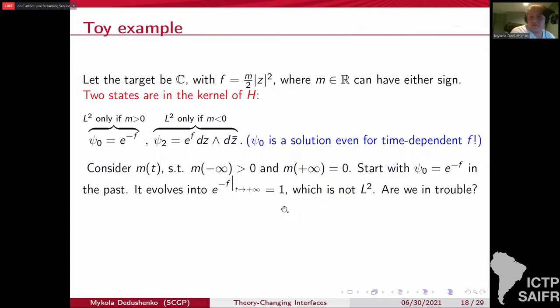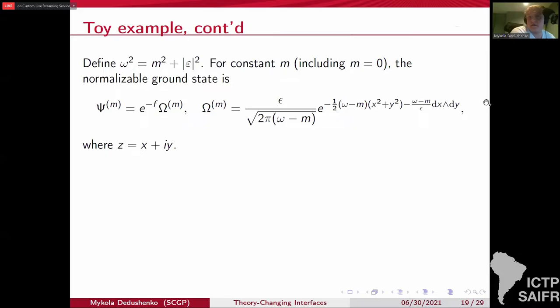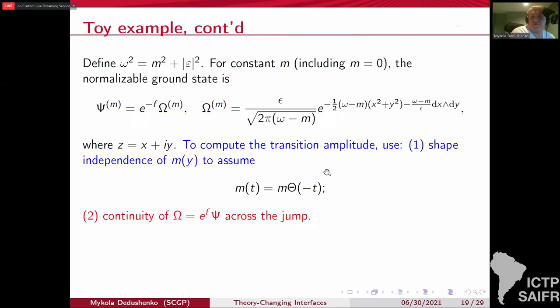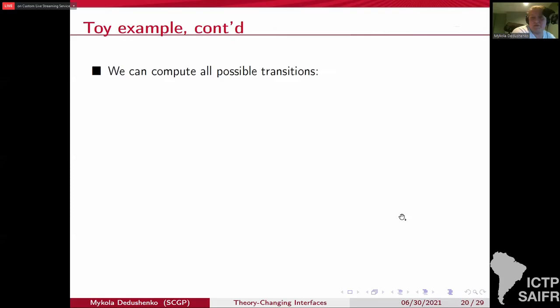And equivariance actually saves the day. If you replace D by the equivariant differential for the rotations of the plane, you can solve the corresponding problem exactly and find the ground states. And they're always square normalizable, even when mass is zero, because this epsilon is present here. And now you can compute the overlaps, this sort of transition amplitudes between regions with different M. It is convenient to assume that M changes as a step function. Because of the shape independence. So we can just compute this transition from M to zero and get some answer.